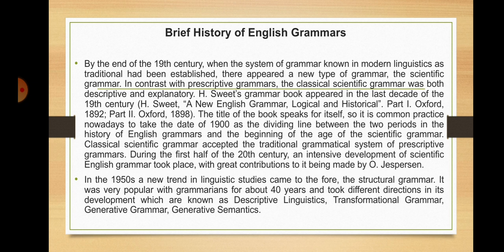By the end of the 19th century, when the system of grammar known in modern linguistics as traditional had been established, there appeared a new type of grammar — the scientific grammar. In contrast with prescriptive grammars, the classical scientific grammar was both descriptive and explanatory. Henry Sweet's grammar book appeared in the last decade of the 19th century — 'A New English Grammar, Logical and Historical.' The title of the book speaks for itself, so it is common practice nowadays to take the date of 1900 as the dividing line between the two periods and the beginning of the age of scientific grammar.